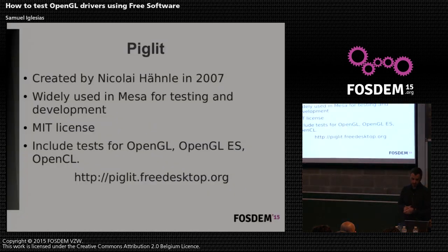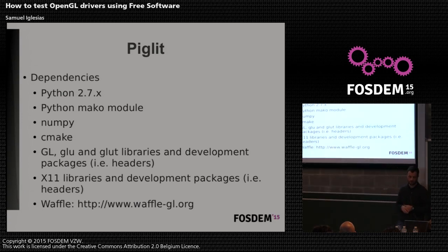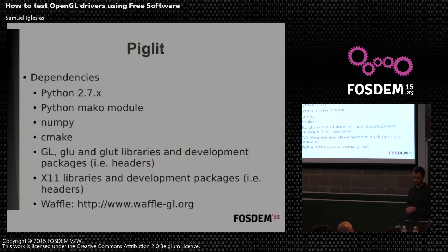Talking about PigLit: it was created in 2007 and is widely used in Mesa for testing and development. It includes tests for OpenGL, OpenGL ES, and OpenCL. To build and install it on your system, you need to fulfill these dependencies: Python 2.7, the Python Mako module that creates source files from templates, NumPy, CMake, GL, GLEW, and GLUT libraries with development packages, and X11 libraries. Usually, at least in Debian-based distributions, Waffle is not in the repositories, so you need to build and install it on your system manually.